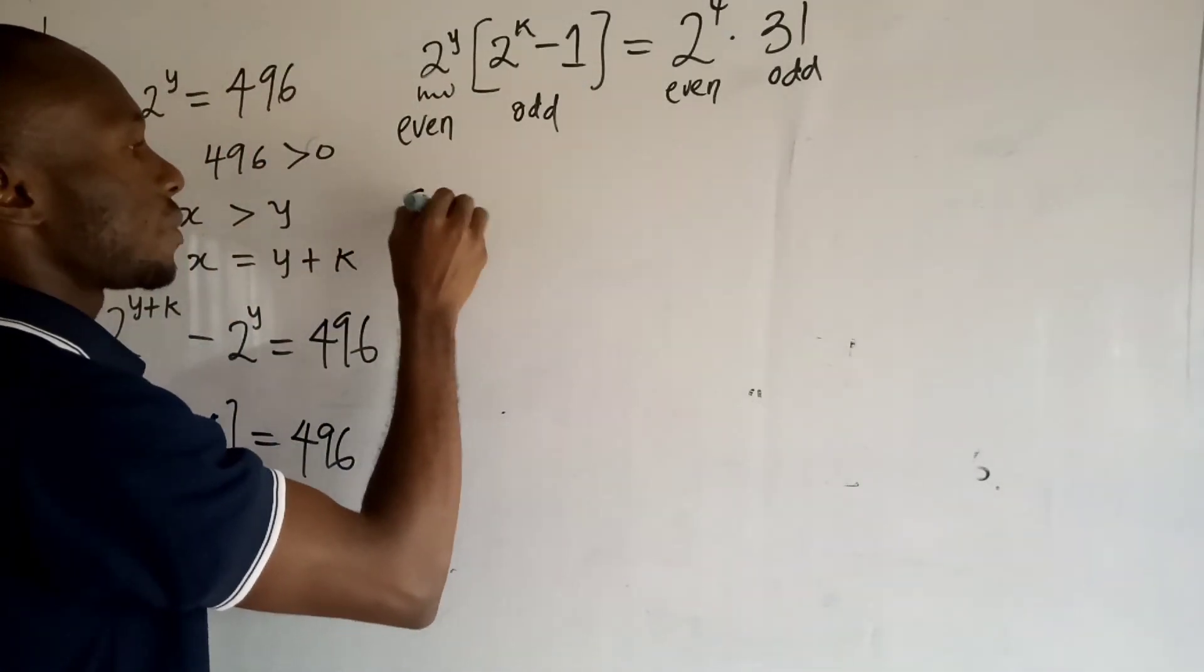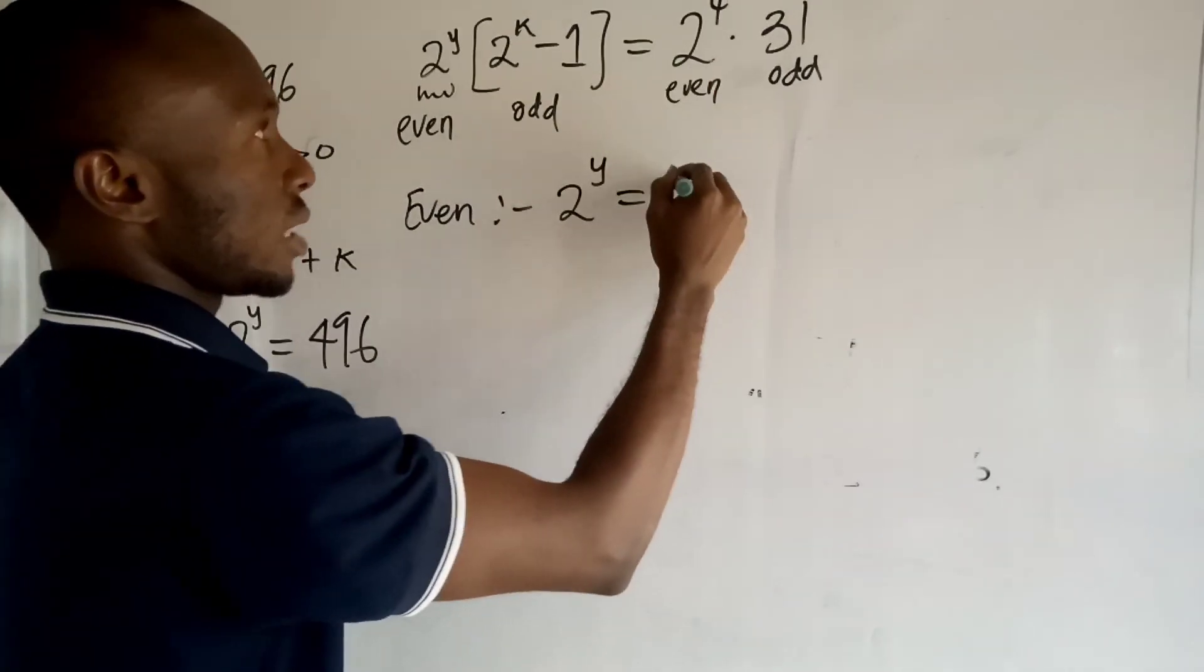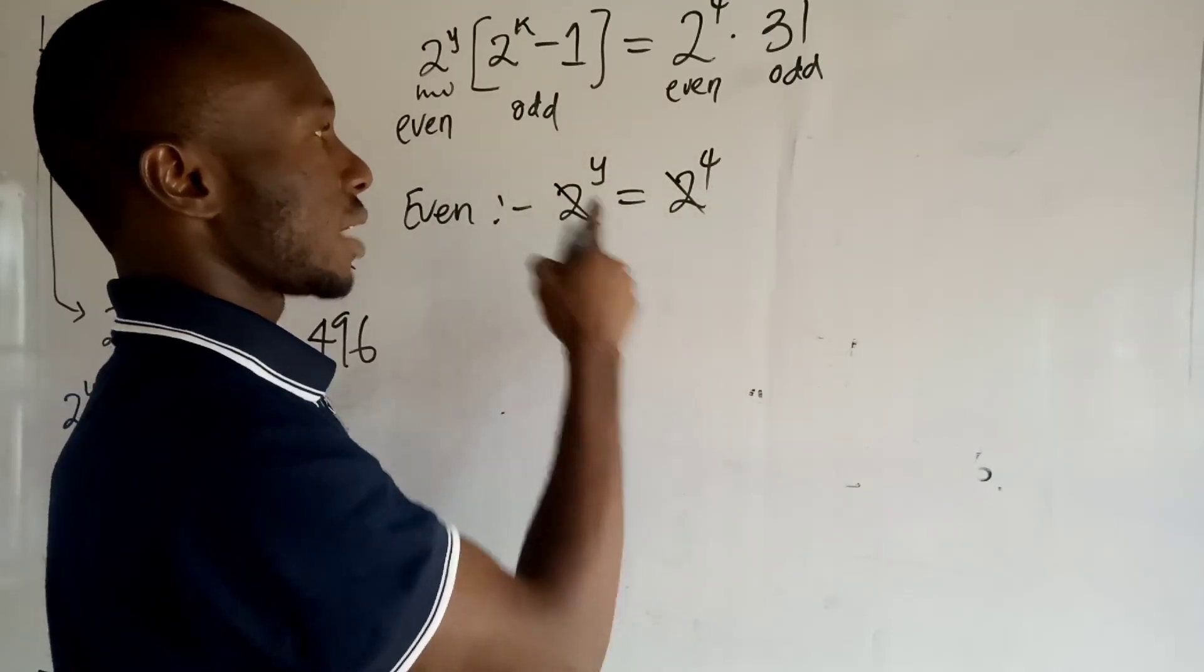So here now I have the even term. I have this guy: 2 to the power y is equal to the even term here, 2 to the power of 4. And it's very clear that from here you can see that y is equal to 4.